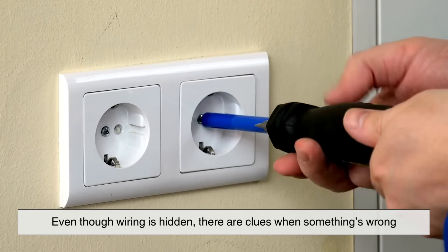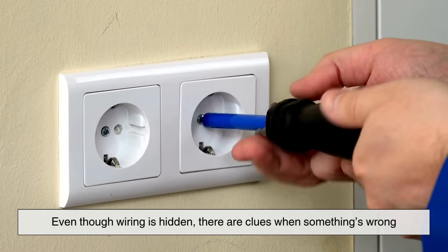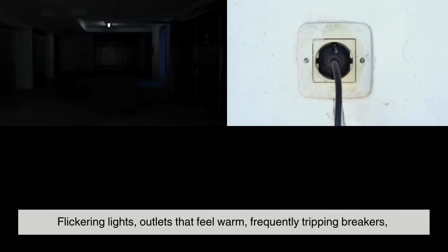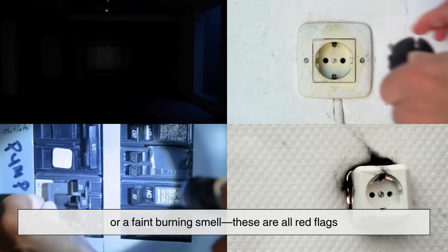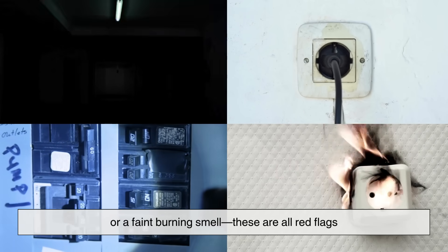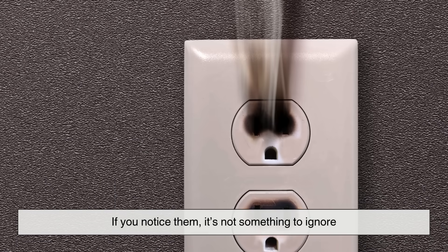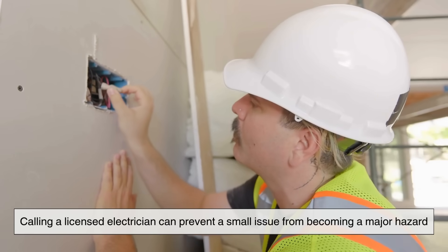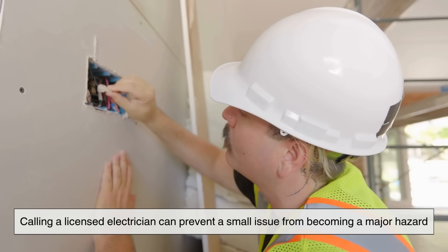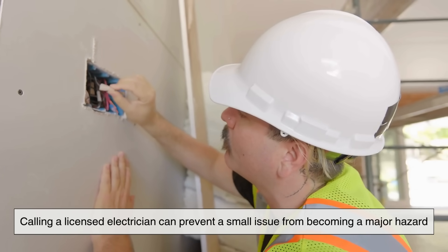Even though wiring is hidden, there are clues when something's wrong. Flickering lights, outlets that feel warm, frequently tripping breakers, or a faint burning smell. These are all red flags. If you notice them, it's not something to ignore. Calling a licensed electrician can prevent a small issue from becoming a major hazard.